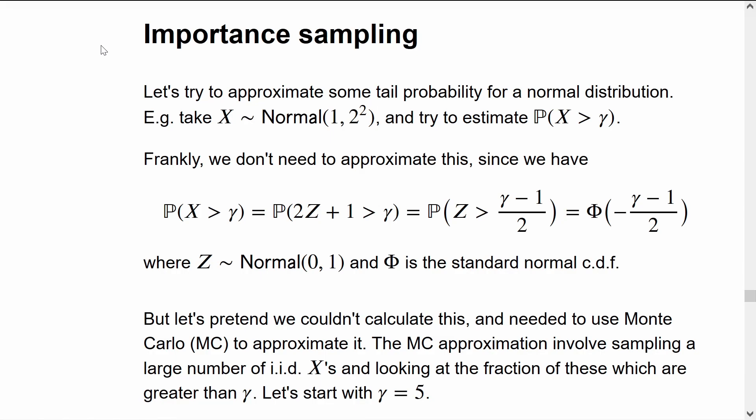We'll start off by taking the threshold of 5, which is quite small, and the Monte Carlo approximation is simply to simulate a large number of these normals and look at the fraction which is above this threshold 5.